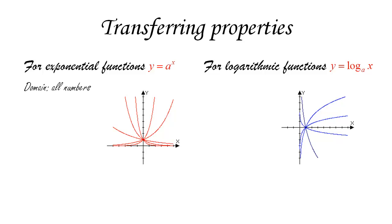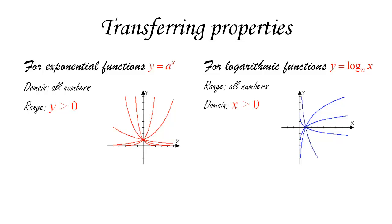For exponential functions, the domain consisted of all numbers. Since inverse functions switch domain and range, the range of a logarithmic function is all numbers — you can get any number as the logarithm of something. On the other hand, the range of exponential functions is only positive numbers, so the domain of logarithmic functions is always positive numbers. We can only compute logarithms of positive numbers.